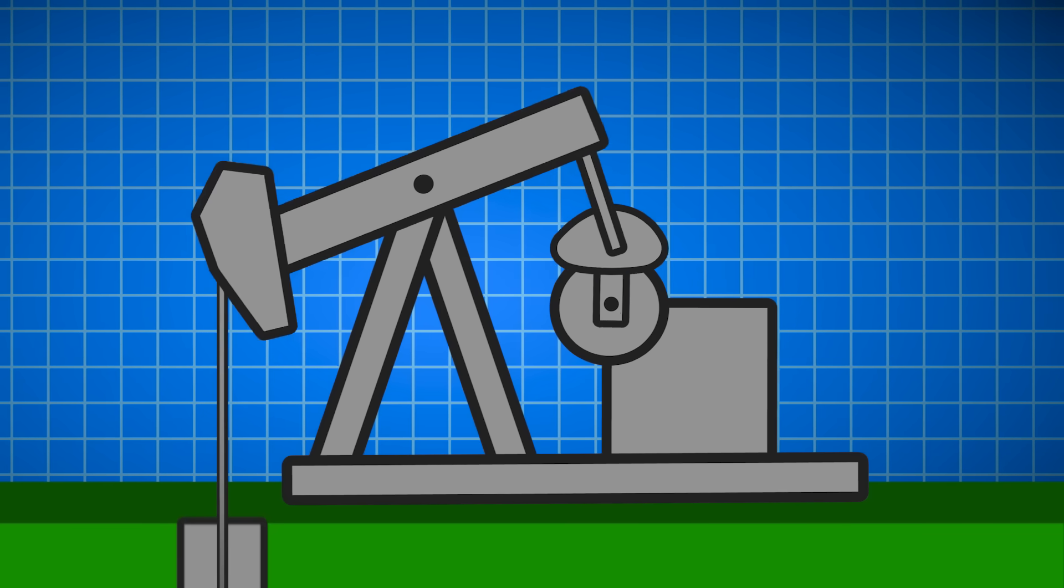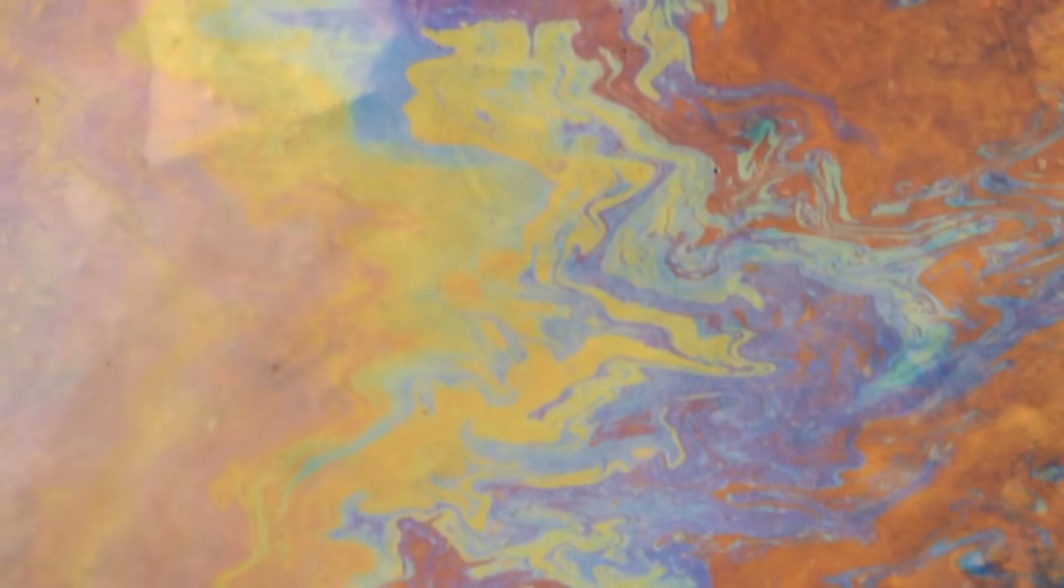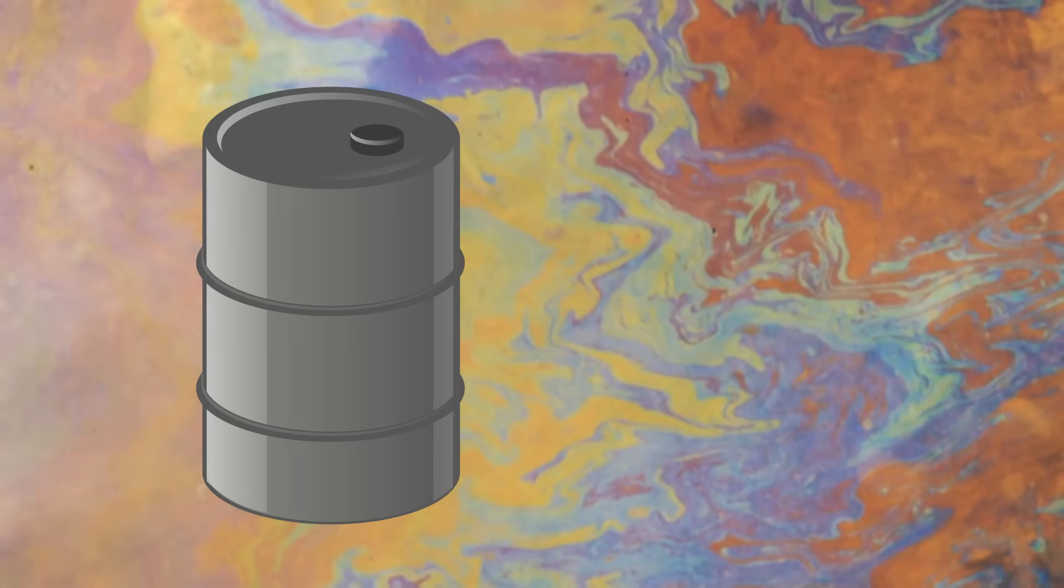These derricks generally pump anywhere from 1.5 to 10 gallons of oil per stroke. The liquid extracted is usually a mixture of crude oil and water that then needs to be separated and refined.